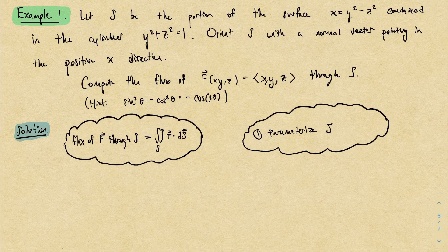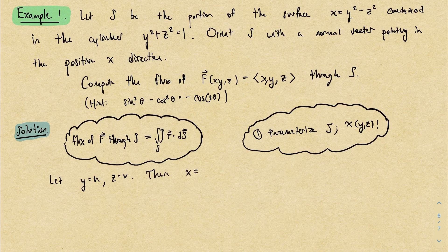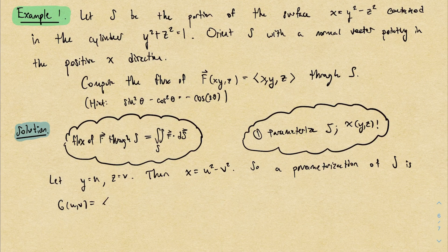We need to start by parameterizing the surface. The key observation is that x is a function of y and z, so this is a scenario where we let y and z be our parameters and x is determined. If I call y = u and z = v, then x has to be u squared minus v squared. This gives us a parameterization — I'll call it g(u, v). The order that I write u and v matters; it's what gives you the orientation.